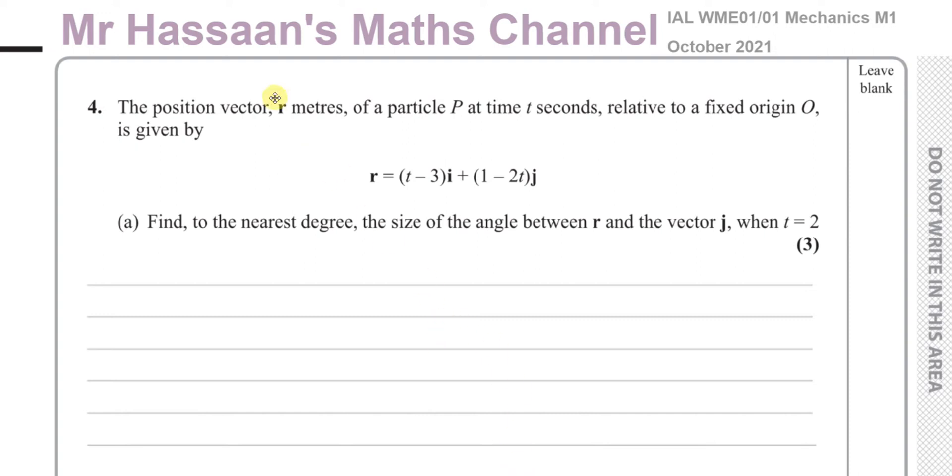Okay, welcome back. This is Mr Hassan's Maths Channel and I'm now answering question number four from the M1 International A-level Mechanics October 2021 exam from Pearson Edexcel. The position vector r meters of a particle P at time t seconds relative to a fixed origin O is given by this vector r equals (t minus 3)i